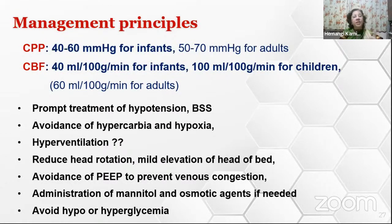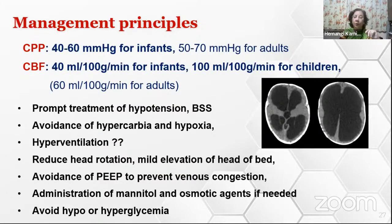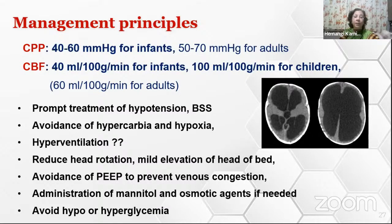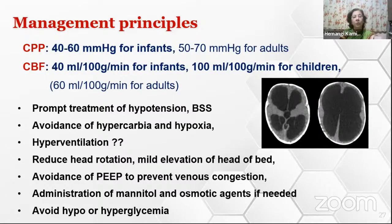Routinely we use hyperventilation to reduce ICP, but in hydrocephalus patients with large dilated ventricles, hyperventilation is not going to be helpful in reducing ICP. On the contrary, it may reduce blood flow to the brain and pose a risk of ischemia, so it should be avoided. Maintain normocapnia, reduce head rotation, and avoid PEEP so that venous drainage is not affected. Mannitol or hypertonic saline may be needed before surgery to reduce ICP. Avoid hypo- and hyperglycemia and perform glucose monitoring.